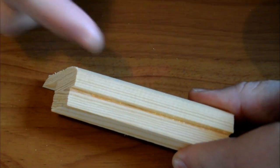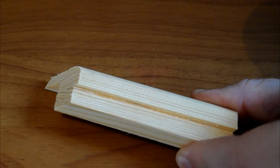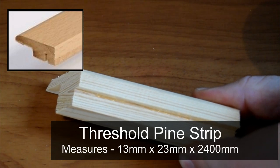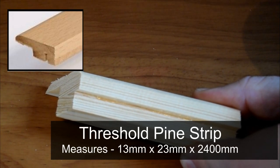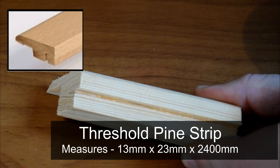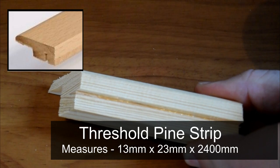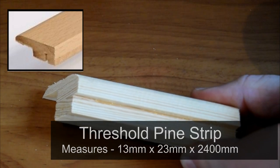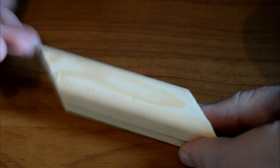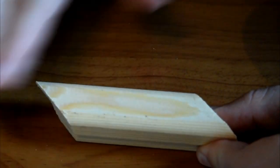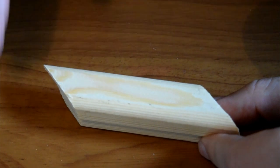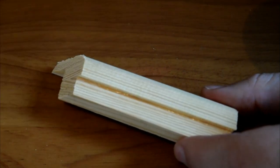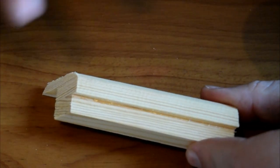This piece here on the bottom is called threshold pine, spelled T-H-R-E-S-H-O-L-D, and it measures 13 millimeters by 23 millimeters by 2400 millimeters, which translates to 2.4 meters. This is really generic pine strips that maybe a joiner would use, maybe putting laminate flooring down or skirting boards, just to make things flush.